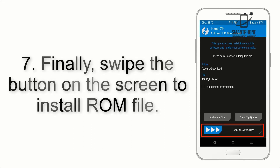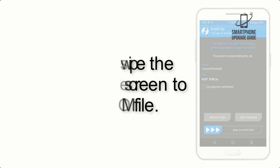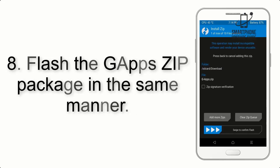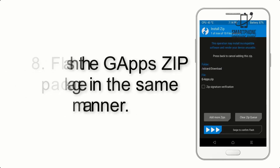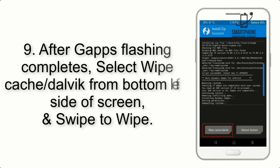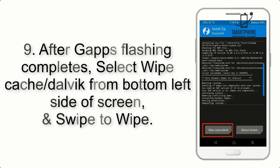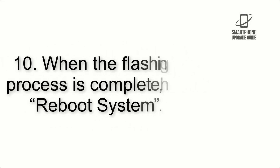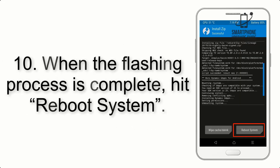Step 7: Swipe the button on the screen to install the ROM file. Step 8: Flash the GApps zip package in the same manner. Step 9: After GApps flashing completes, select Wipe Cache and Dalvik from the bottom left side of the screen and swipe to wipe.